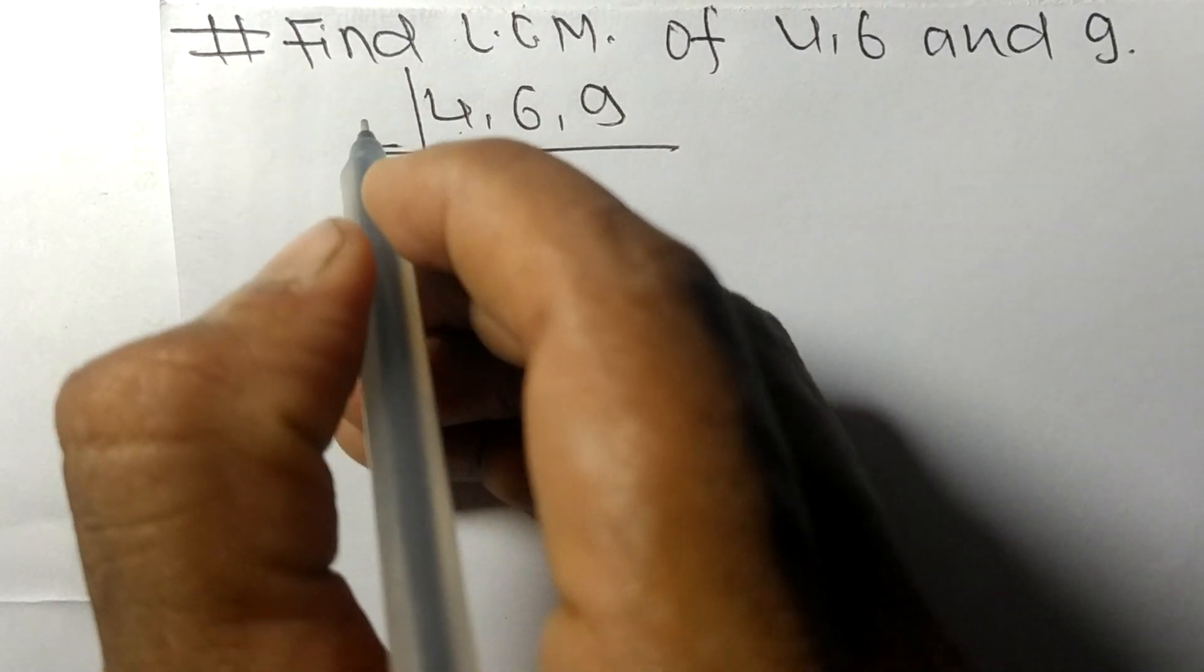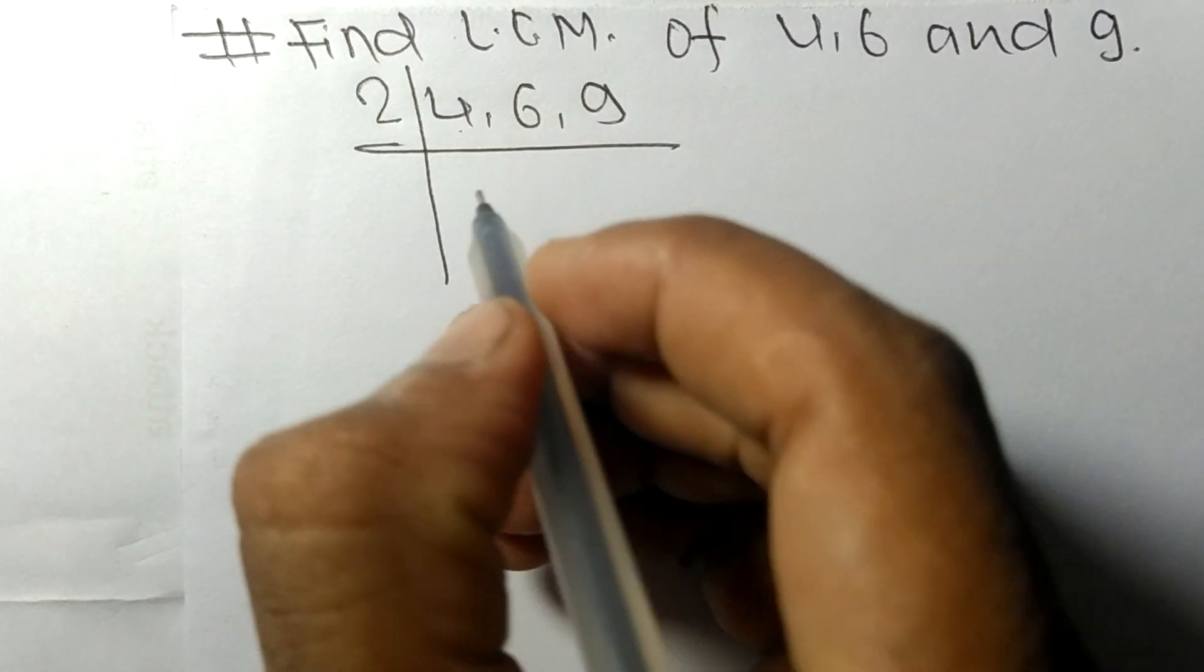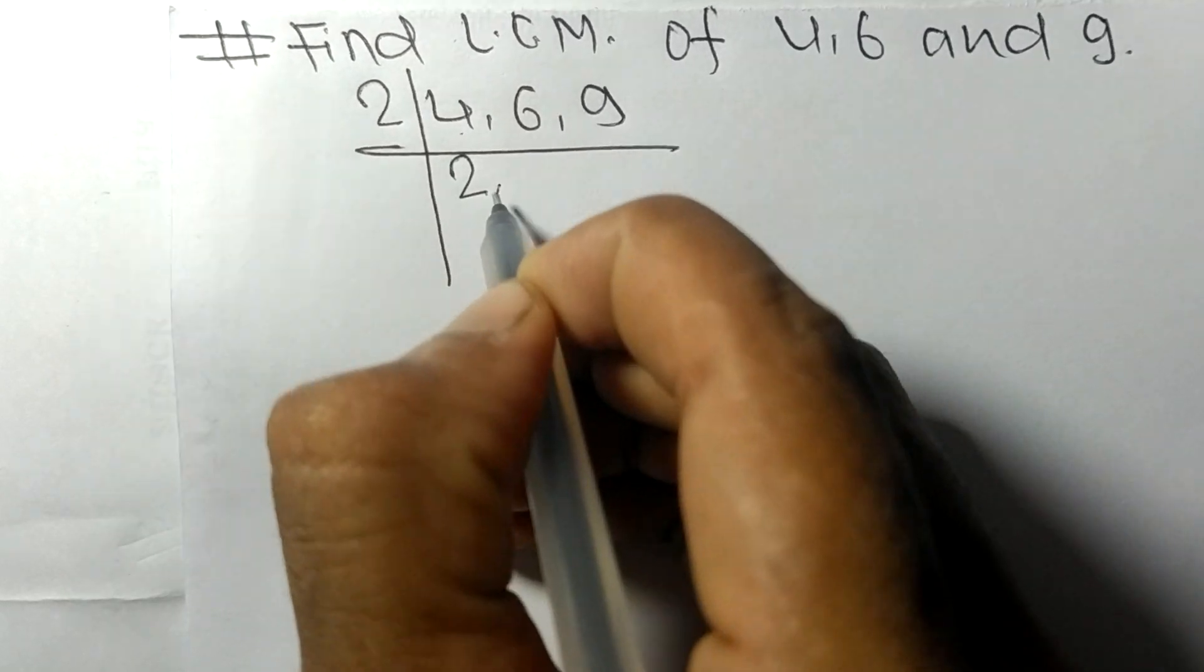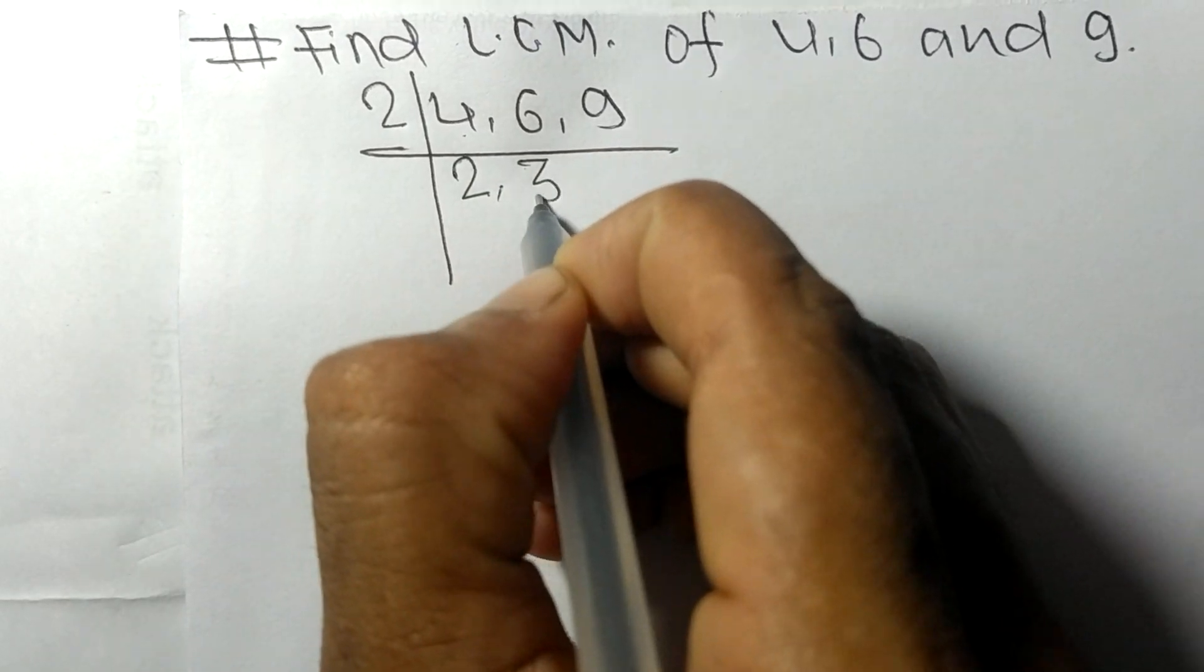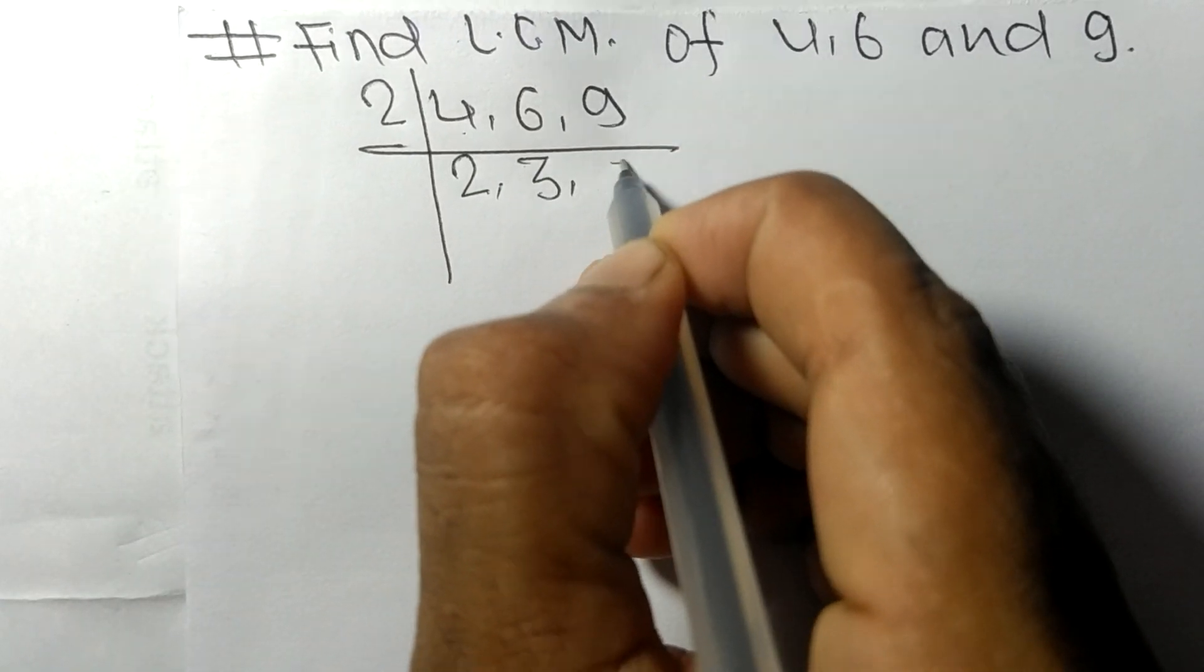2 times 2 means 4, 2 times 3 means 6, 9 as it is.